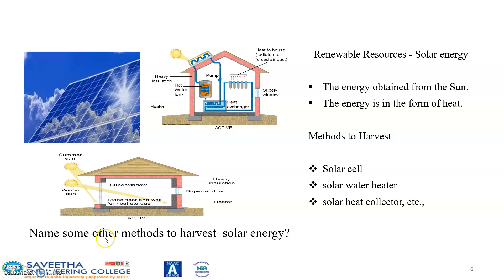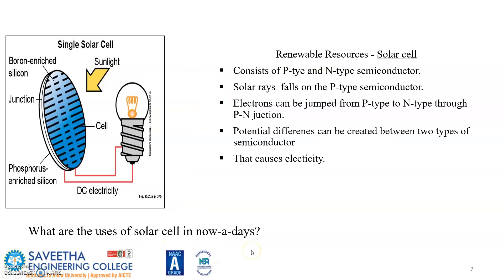A question is posed: please give the names of some other methods to harness solar energy. A solar cell is made of two components — p-type and n-type semiconductors. Solar light falls on the p-type semiconductor panel, and electrons move from the p-type to the n-type at the p-n junction. This is where the two types of semiconductors are connected, and a potential difference is generated between these two junctions, which causes electricity.